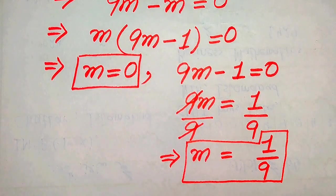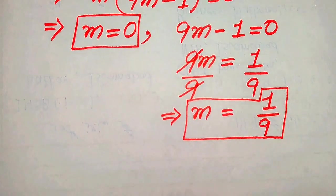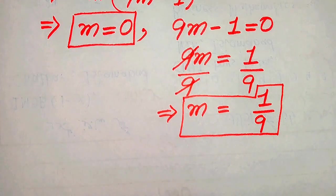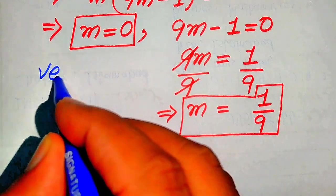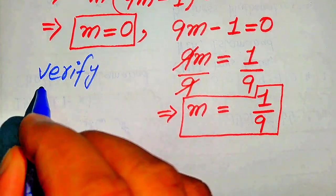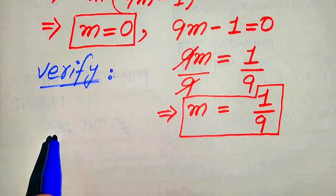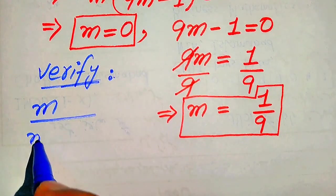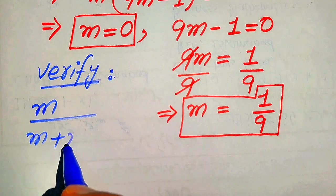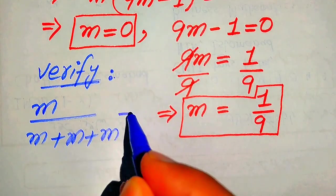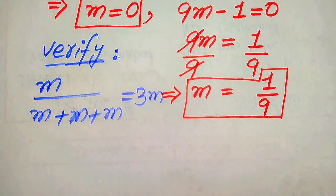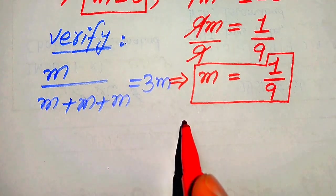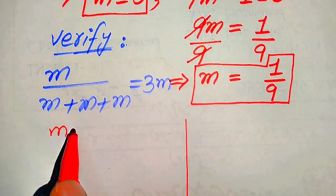Now we need to check which of these roots is actually a solution of the given equation. For verification, we copy down the given equation: m divided by (m plus m plus m) equals three times m. We will substitute both values of m into this equation.